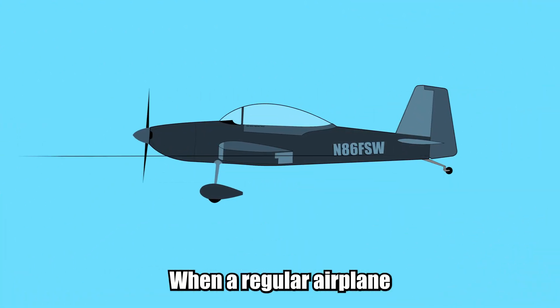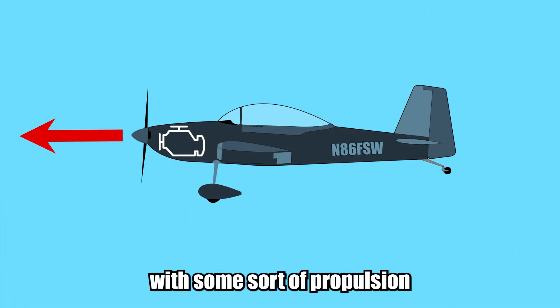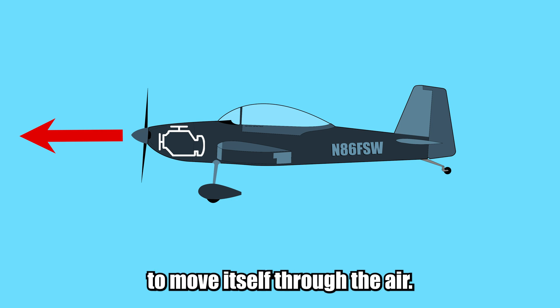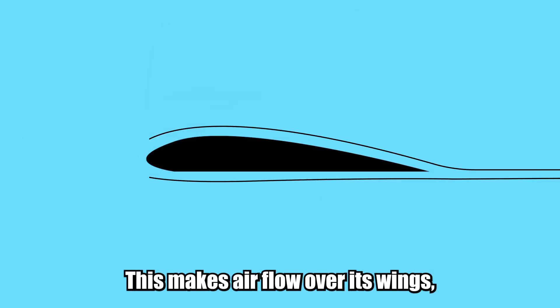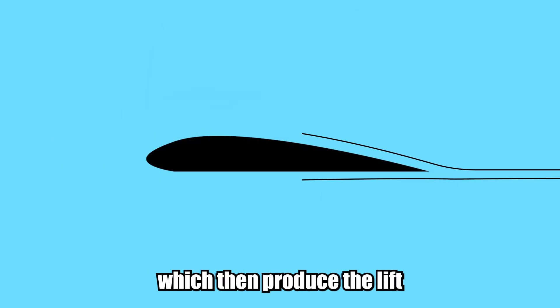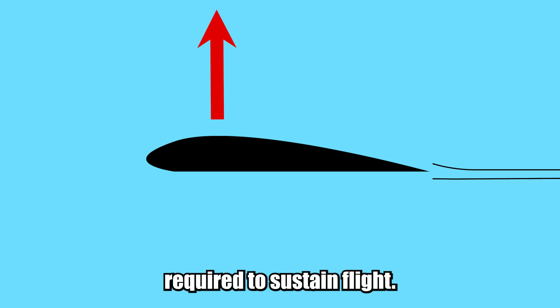When a regular airplane flies through the sky, it uses an engine with some sort of propulsion to move itself through the air. This makes air flow over its wings,